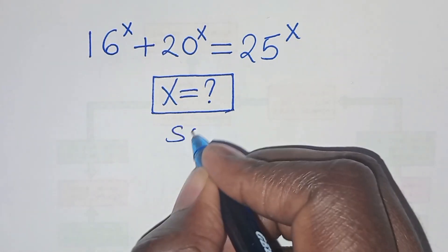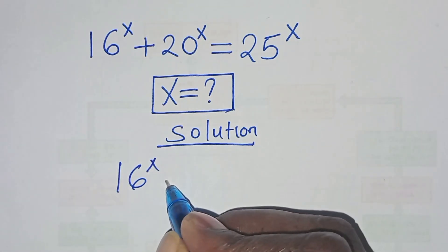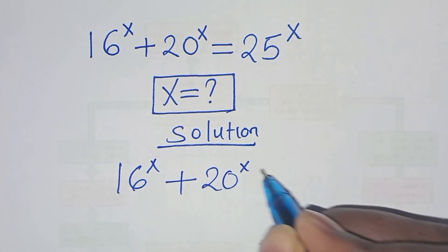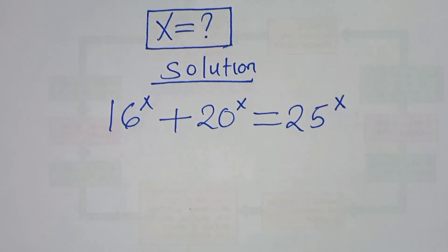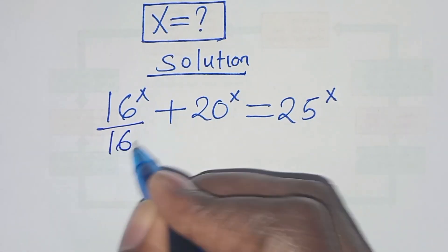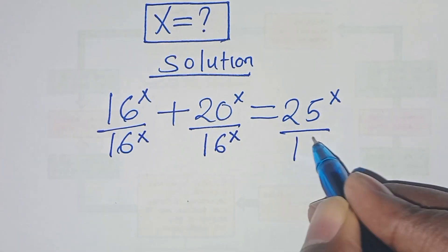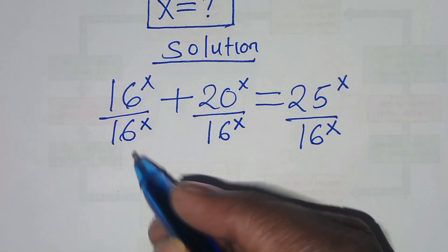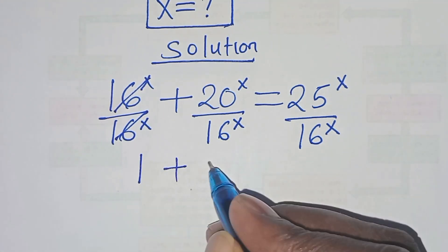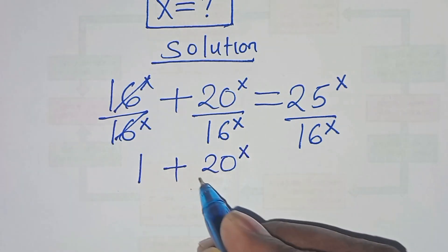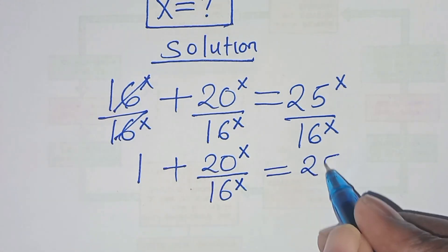Now let's provide the solution. We have 16 to power x plus 20 to power x equals 25 to power x. The first step is to divide both sides by 16 to power x. Simplifying, we have 1 plus 20 to power x over 16 to power x, which equals 25 to power x over 16 to power x.